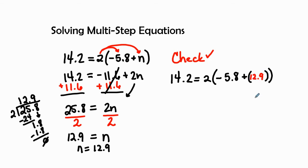Let's go ahead and simplify. So we have 14.2. We have 2 times the quantity of what is going on inside here. We have 12.9 minus 5.8. We have 12 minus 5 is 7, so this is going to be a positive 7.1. So 14.2 is equal to 2 times 7.1, that's 14.2.